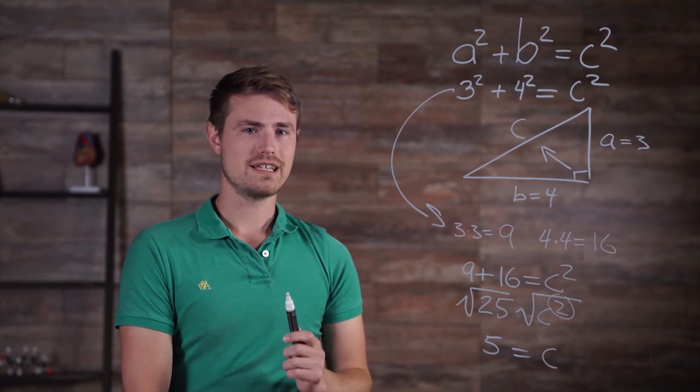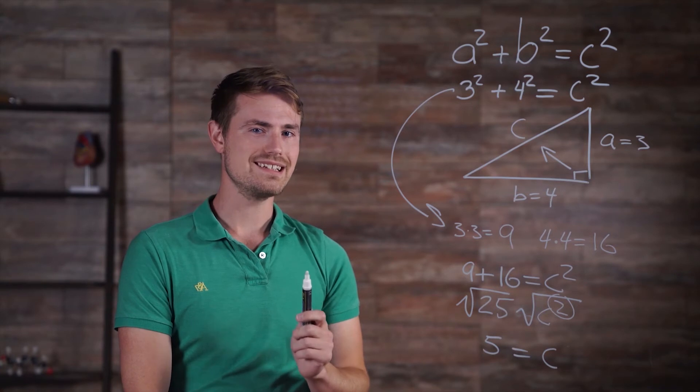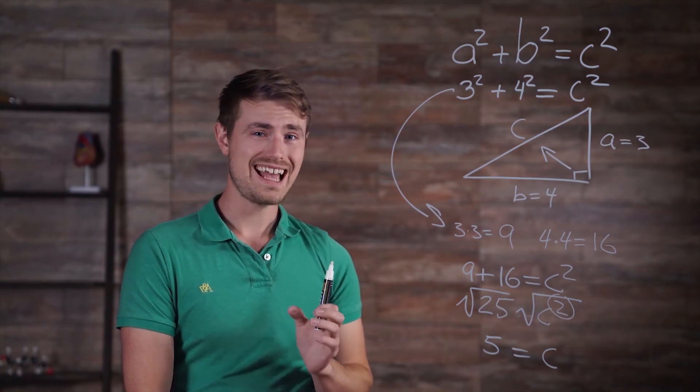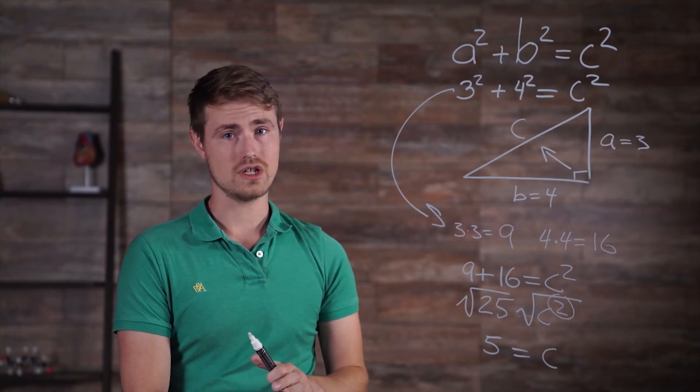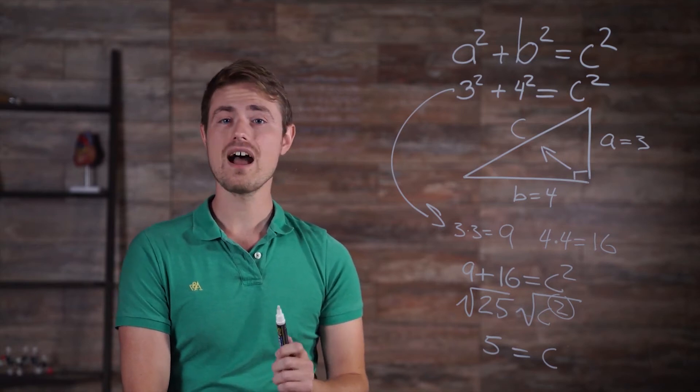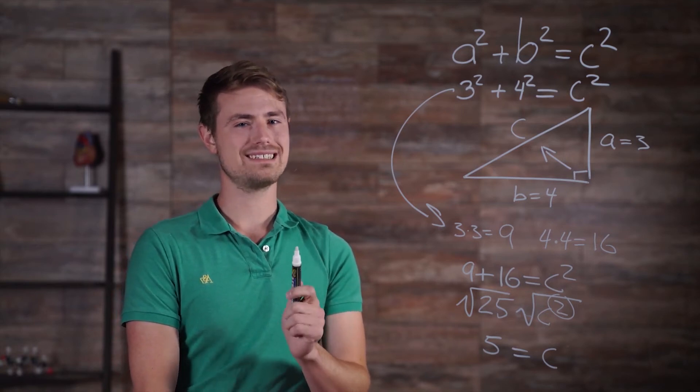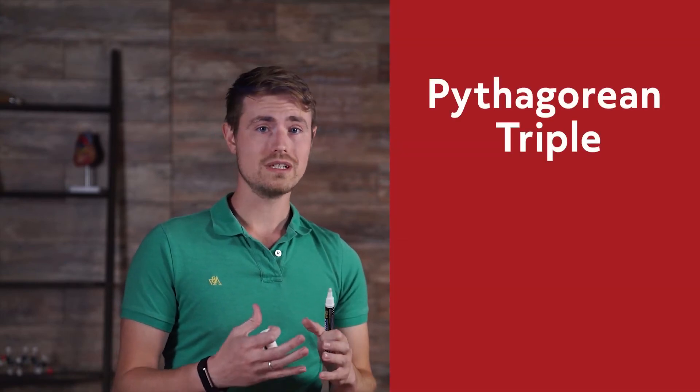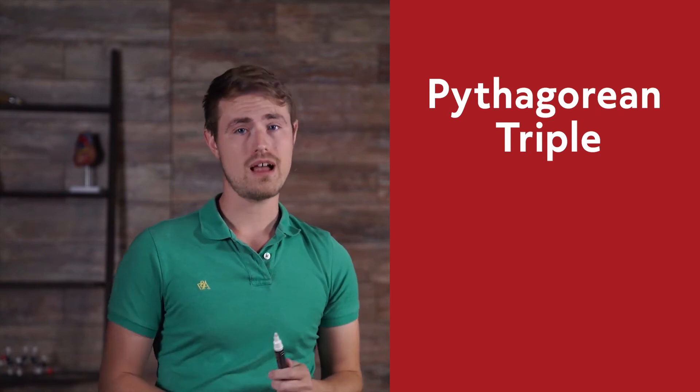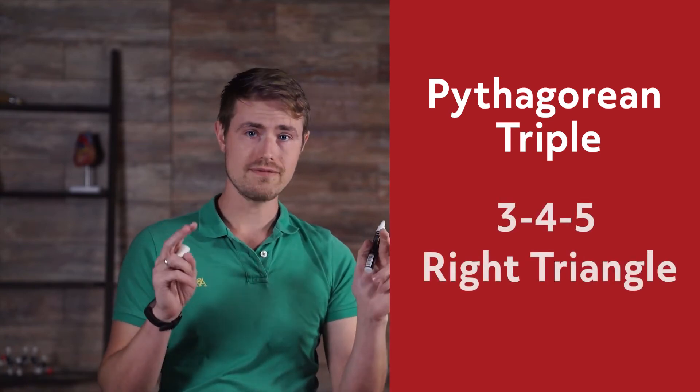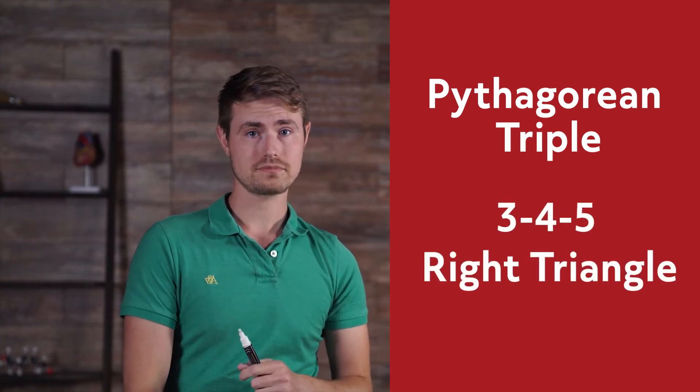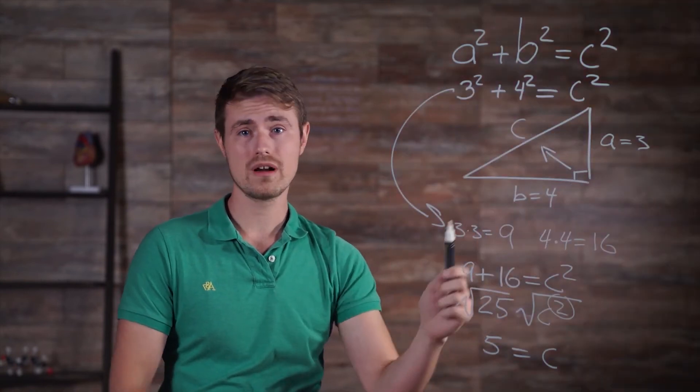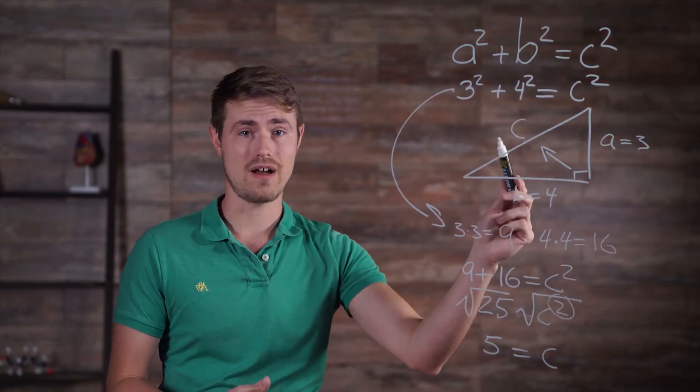So, you might have noticed that the answer to this problem was a nice, neat integer, five. This is actually kind of rare if we look at random triangles, but it's not rare in a math problem you might see on a test. It happens whenever a problem uses a Pythagorean triple. The triangle we just looked at is the most common kind of a three, four, five right triangle. The legs measure three and four, and the hypotenuse is five.